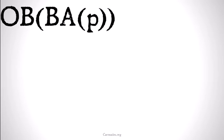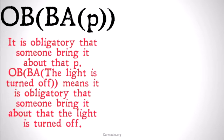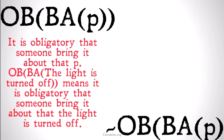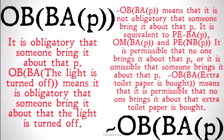Now we're going to look at how bringing about can be paired with our obligations to describe ways that obligations are expressed in terms of agents. OBBA-P means it is obligatory that someone bring it about that P. 'OBBA, the light is turned off' means it is obligatory that someone bring it about that the light is turned off. Not OBBA-P means it is not obligatory that someone bring it about that P — equivalent to: it's permissible that no one brings it about that P, or omissible that someone does bring it about that P.